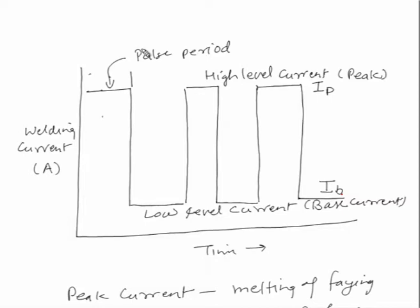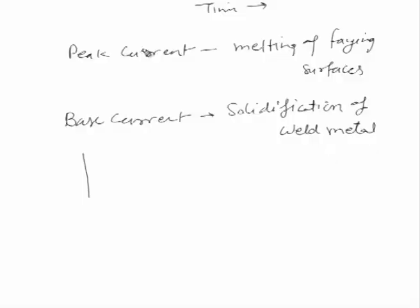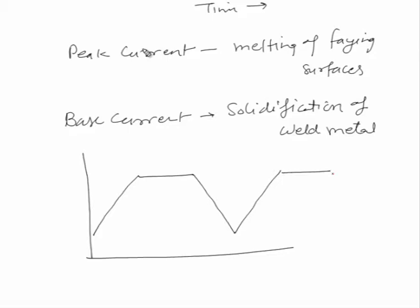This is how the welding current is varied during the pulsed welding process. However, there can be various kinds of variation in the current. Depending upon the rate of rise in the current, there can be different slopes. This square waveform is one example; there can also be a triangular waveform or other waveforms depending upon the way current increases from the base current to the peak current level.